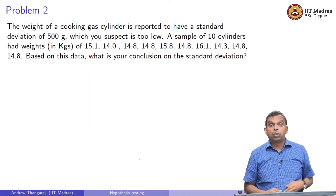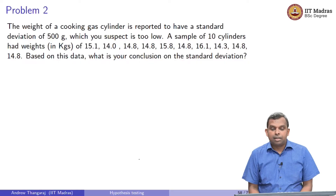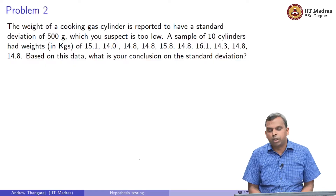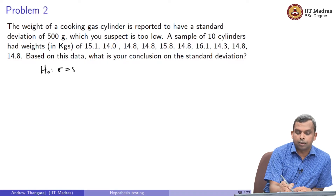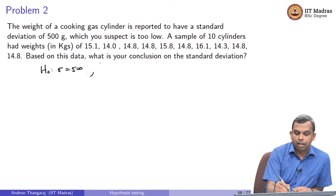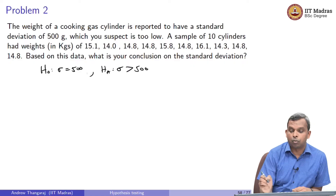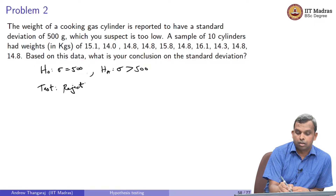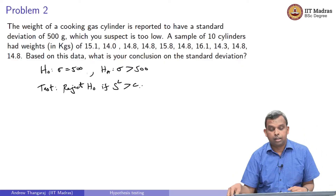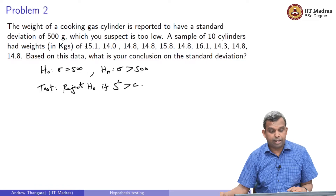Let us move on to problem two. Here you have cooking gas cylinders and somebody is reporting the standard deviation to be 500 grams, and you think it is too low — it should actually be higher. So your null hypothesis is σ = 500 grams, and your alternative is σ greater than 500. Your test is: reject H₀ if s² is greater than c.